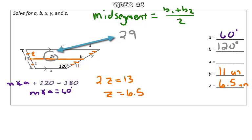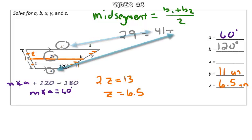So 29 equals base 1, which is 41, plus base 2, which is X, divided by 2.